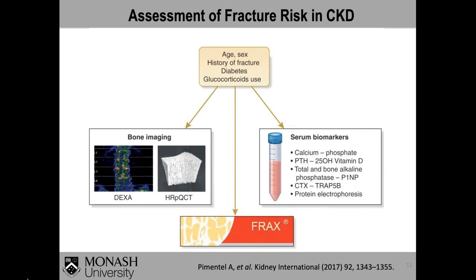European guidelines recommend assessing fracture risk through history — age, prior fracture, presence of diabetes (which further increases fracture risk in CKD), and glucocorticoid use. Bone imaging with DEXA should be performed, and high-resolution pQCT where available. Serum biomarkers including calcium, phosphate, PTH, 25-hydroxyvitamin D, total and bone-specific alkaline phosphatase, P1NP, CTX, and TRAP5B should be used to measure bone turnover. Monoclonal gammopathies should be excluded with protein electrophoresis, and FRAX used to assess absolute fracture risk.